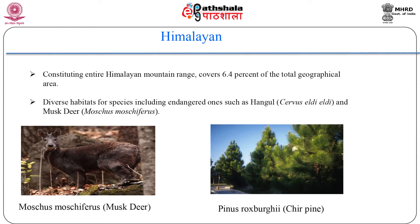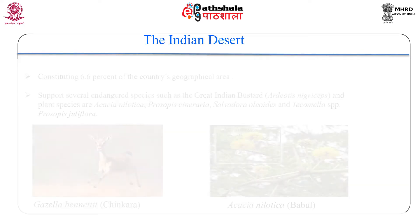The Himalayan zone consists of the entire Himalayan mountain range, covering 6.4 percent of the total geographical area. It has alpine and subalpine forests, grassy meadows, and moist deciduous forest areas. More than 300 million people of the Indo-Gangetic plain are dependent on Himalayan waters. The Himalayan zone has diverse habitats for a range of species including endangered ones such as hangul and musk deer. In the lower subtropical belt, moist deciduous forests occupy the lowest elevations, replaced by chir pine and then by banj oak at around 2000 meter elevations.